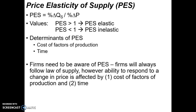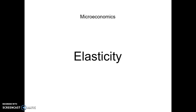The key takeaway: firms need to be aware of price elasticity of supply. Firms will always follow the law of supply; however, the ability to respond to a change in price is affected by the cost of factors of production and the time available to react to that price change. That wraps up part two of our elasticity presentations.